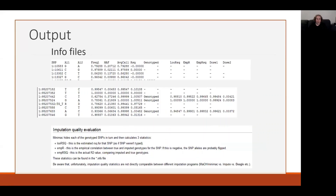Alongside the VCF, we have a series of info files that contain information about the imputation accuracy and the frequency of the variants in the sample. These include SNP identifiers — some of which can get quite long — the two alleles, frequencies, R-squared or imputation accuracies, a column indicating whether the SNP is genotyped or not, and for genotyped SNPs, a leave-one-out imputation accuracy. This gives us an idea of how accurately these genotyped SNPs have been — or would have been — imputed if they weren't already genotyped.